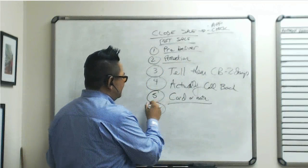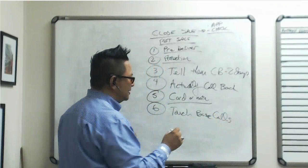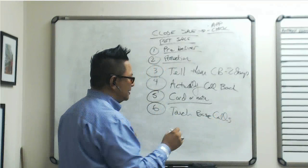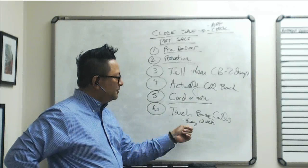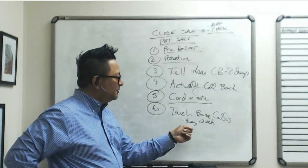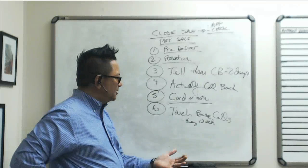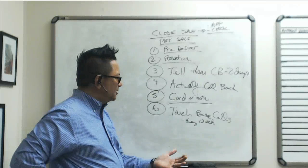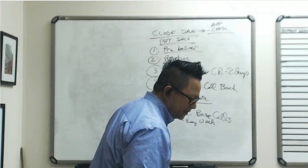Number six: touch base calls. If you have a longer case taking more than a week to get issued, touch base with them every single week during underwriting. Leave a voicemail, send an email, or call them: 'Joe, Mary, this is Alex — just want to let you know everything's progressing. I haven't heard anything yet, but as soon as I do I'll let you know.' That's how you lock them down so they know what's going on.